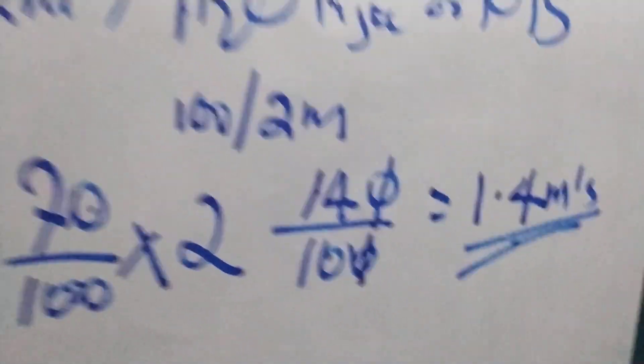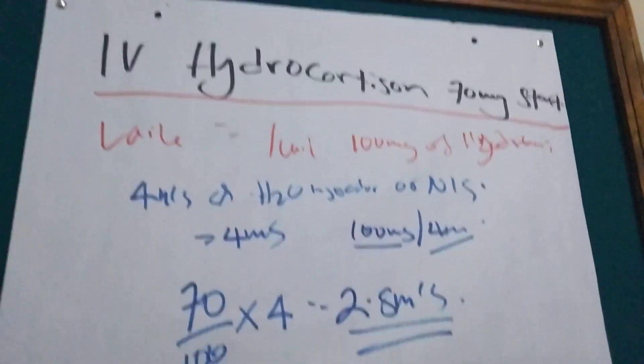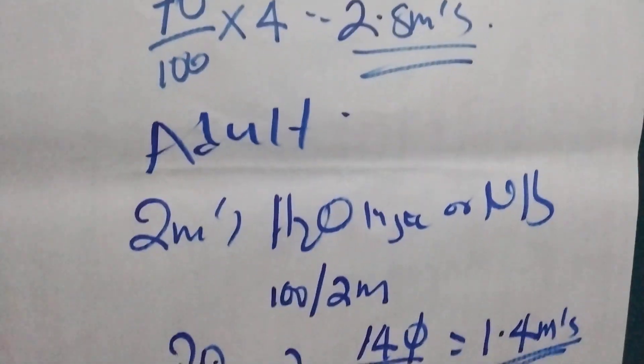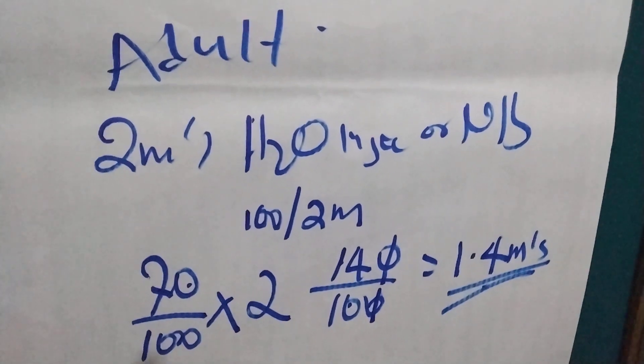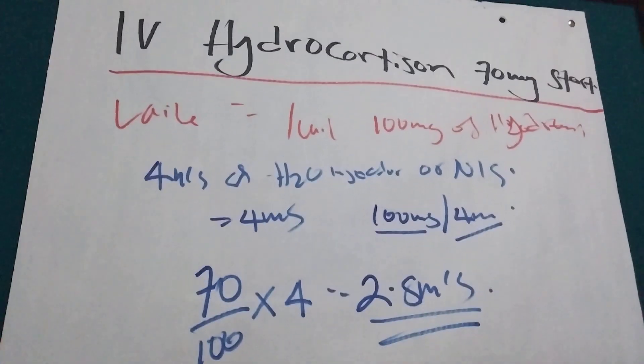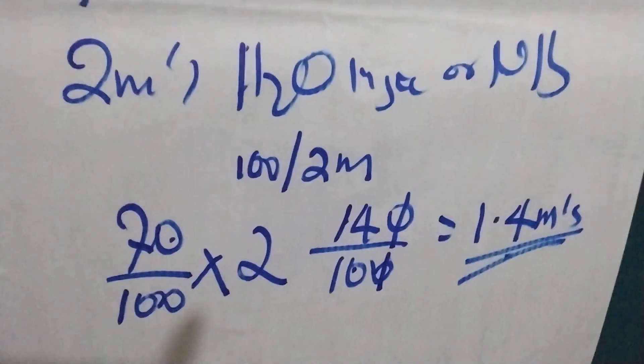So that is the ml we are going to aspirate and give to the person. So that is how we can give hydrocortisone in both children and adults. Thank you for watching and see you in the next one.